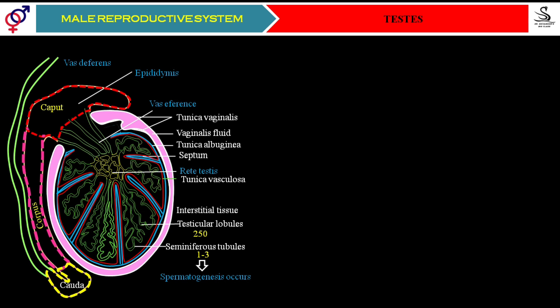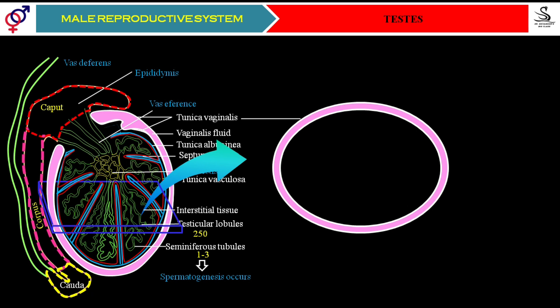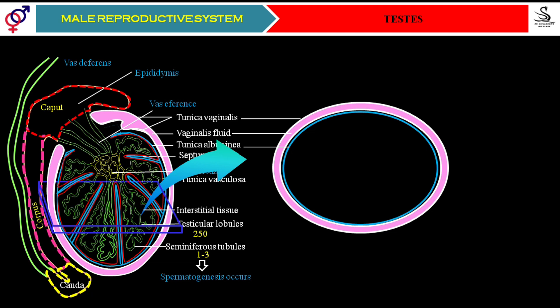Now we take a cross-sectional view of the testes. We find the outer layer tunica vaginalis, which is made up of two layers — inner and outer. Between the outer and inner tunica vaginalis layers we find a fluid called vaginalis fluid. Then inside that layer we find tunica albuginea, which creates the compartmentalization of the testes. Inside that we find tunica vasculosa.